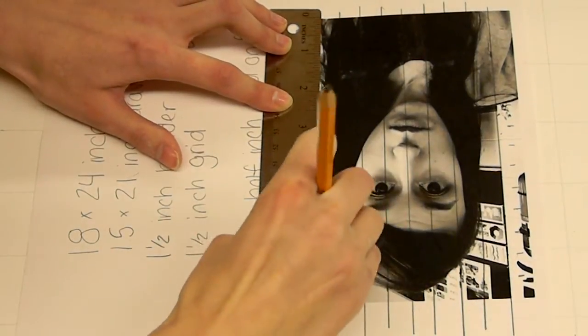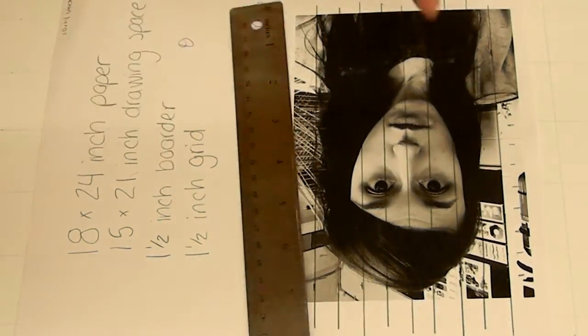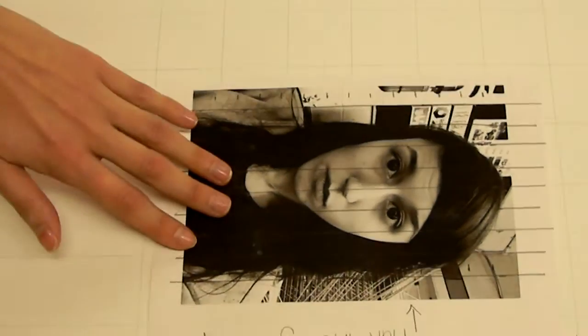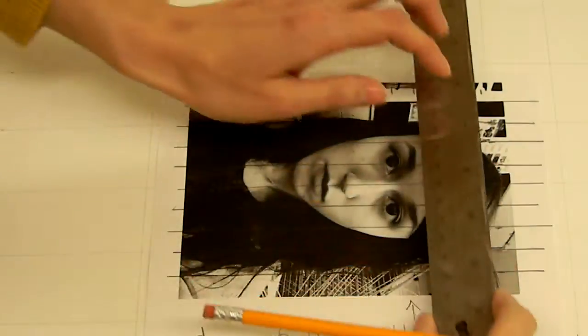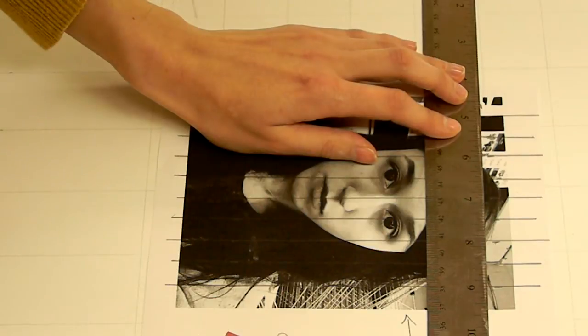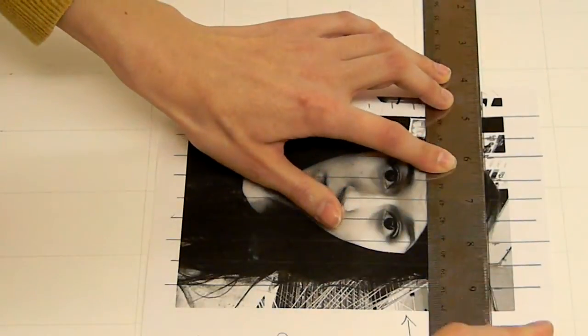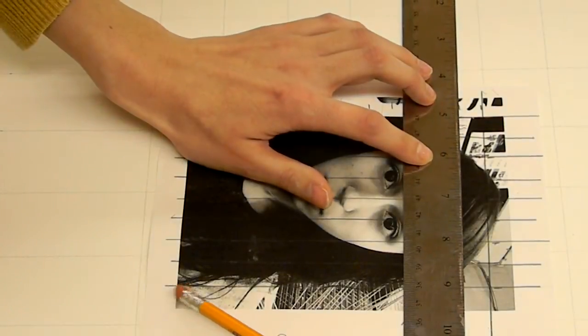Now I'm going to connect those two marks, making a very simple basic grid along my whole paper. I want to press really hard over my photograph so I can see where my grid lines are.